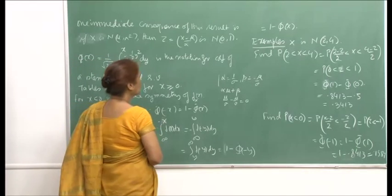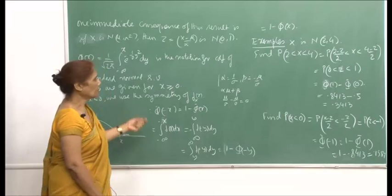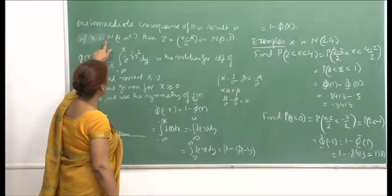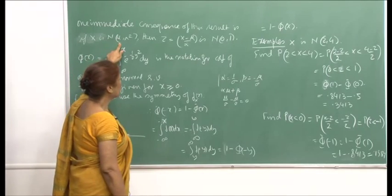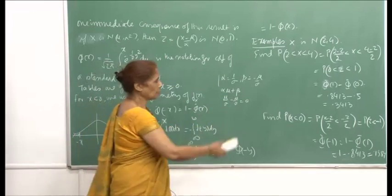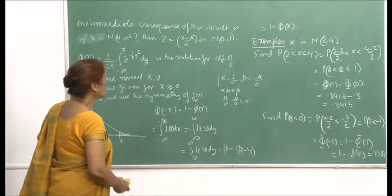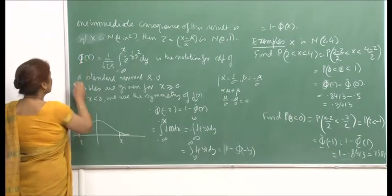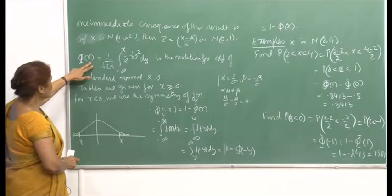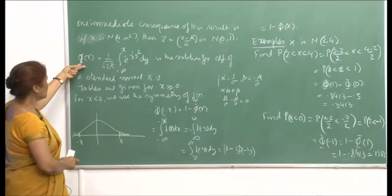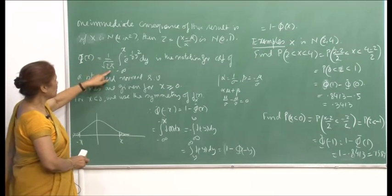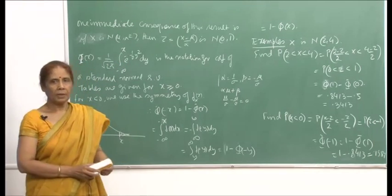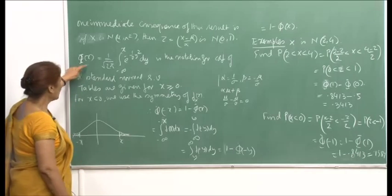We have tables for computing the various probabilities for N(0, 1), and you can compute the probabilities for any normal random variate through this transformation. This is the standard notation for a standard normal variate. This is the CDF: Φ(x) = (1/√(2π)) ∫ from minus infinity to x of e raised to minus half y squared dy. The tables are given for x non-negative. For x less than 0, we use the symmetry of the PDF, since the standard normal is symmetric about the origin.